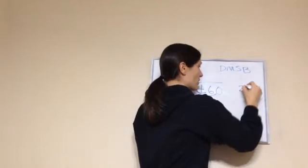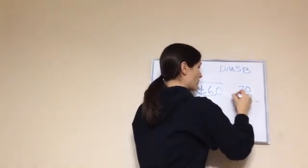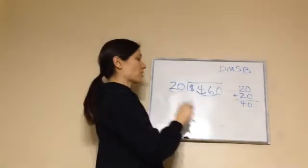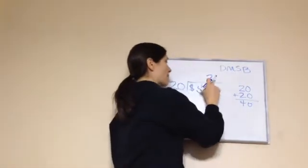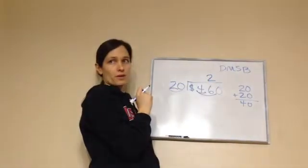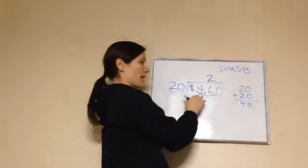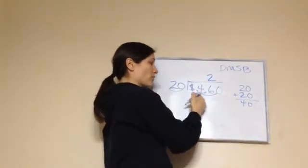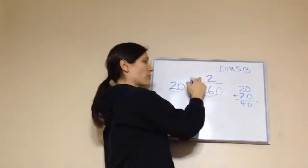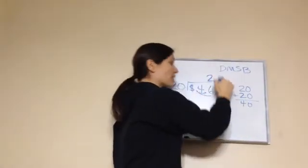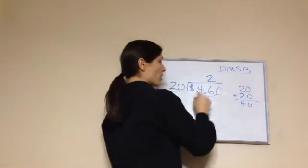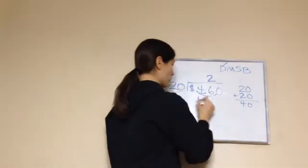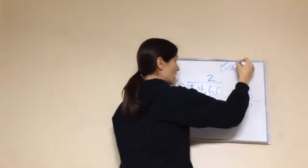20 will go into 46. Let's add one 20, then another: 20 plus 20 equals 40. Can we add another 20? No, that would go over. So how many 20s did we do? 2. Why do I put the 2 above the 46 position? Because if it went over it would cover all $4.60, and if it only covered 4, we'd put it there. So because we wanted 46, we put the 2 here. 20 times 2 equals 40.